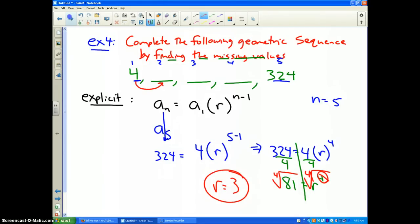So now I go back up here and all I do is multiply every number by 3. 4 times 3 is 12. Well, 12 times 3 is 36. 36 times 3 is 81. And 81 times 3 is 324. And I have completed my geometric sequence.